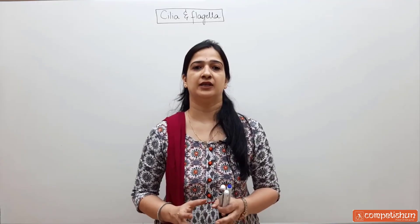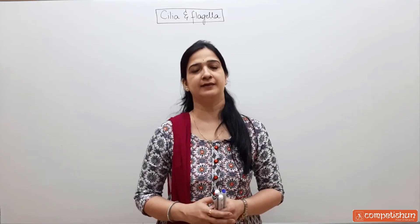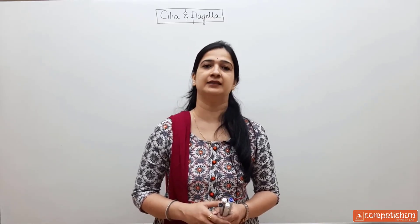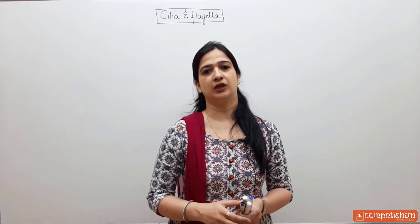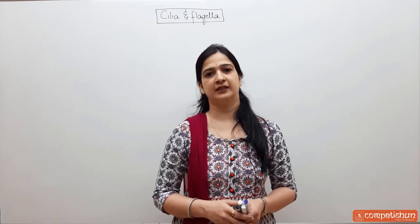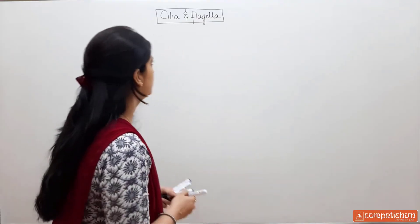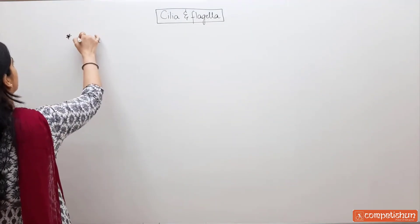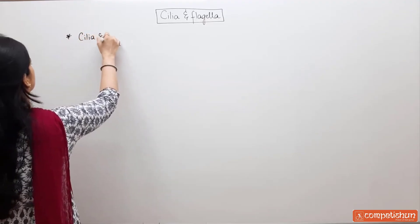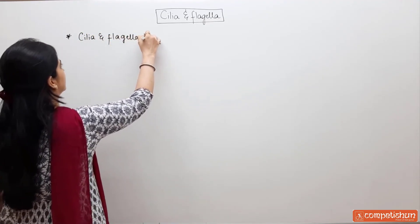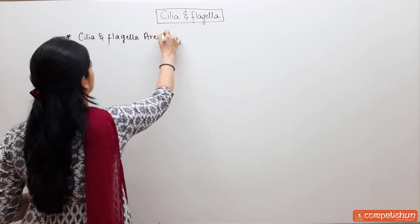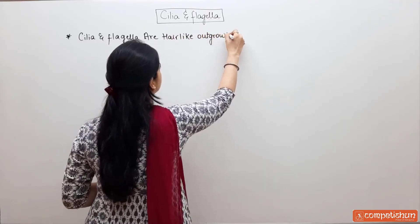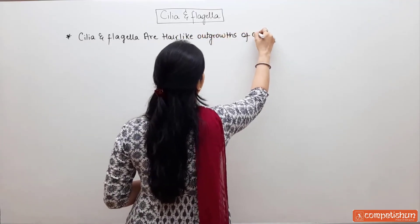When we talk about cilia and flagella, we will see some differences in them; however, the basic structure is similar. Let us note down the differences first and then we will study the structure in detail. Cilia and flagella are hair-like outgrowths of the cell membrane.